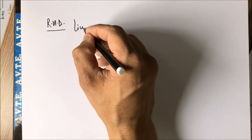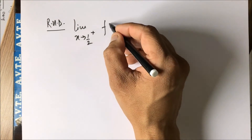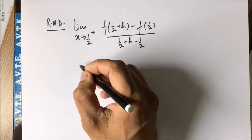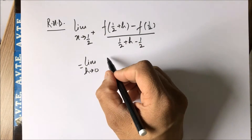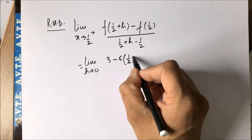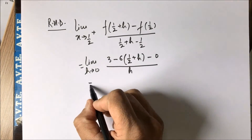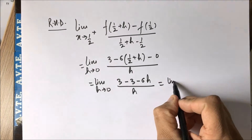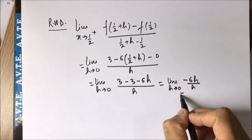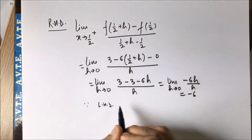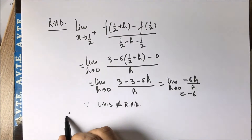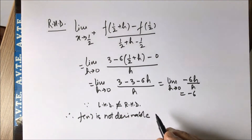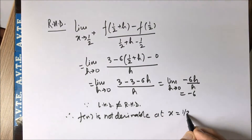Now finding the right-hand derivative. Because the left-hand derivative is not equal to the right-hand derivative, f(x) is not derivable — it is not differentiable at x equal to 1/2.